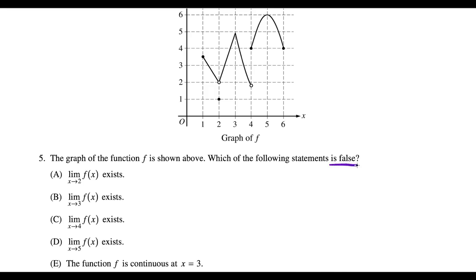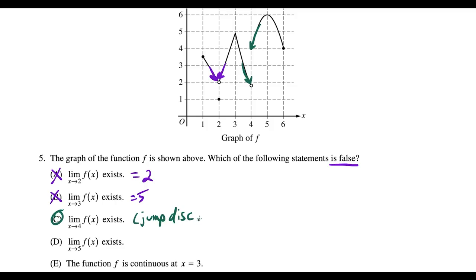Question five asks which statement is false. The limit as x→2 exists (equals 2) — true. The limit as x→3 exists (equals 5) — true. The limit as x→4 exists is false: the left-side limit approaches 2 and the right-side limit approaches 4, so there's a jump discontinuity — left and right limits don't match. The limit as x→5 (heads to 6) is true. The function is continuous at 3 — true. So the answer is choice C.